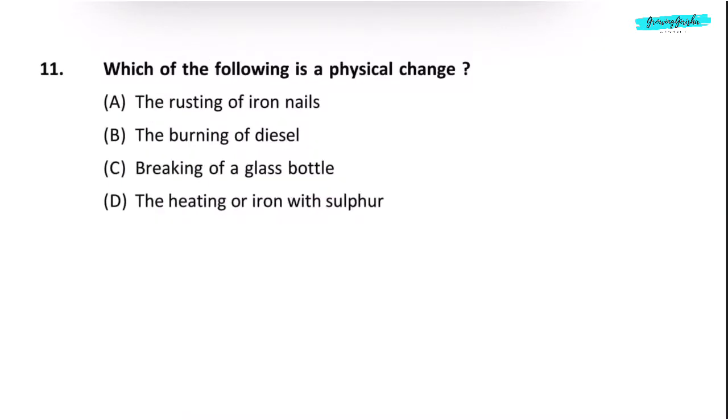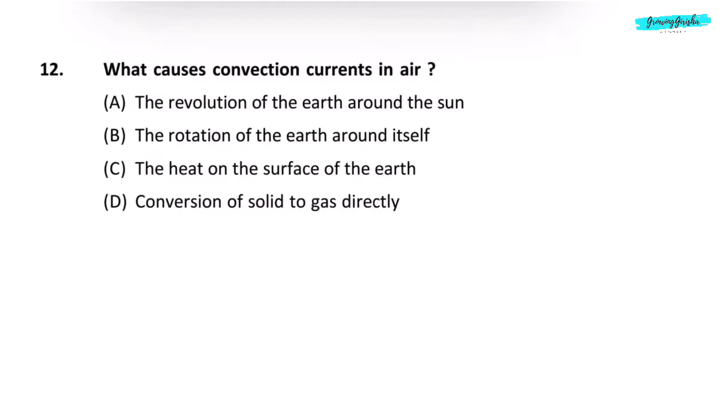Question 11. Which of the following is a physical change? Option C. A glass bottle after it breaks undergoes a change only in its shape and size, but not in its composition. Question 12. What causes convection currents in air? Air on the surface of the earth gets heated up due to sunlight. It becomes lighter and goes up, gets cooled and comes down. Correct answer is option C, the heat on the surface of the earth.